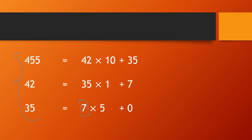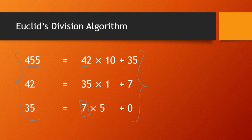So if we skip the long division method and use only Euclid's Division Lemma, we can find HCF of two numbers. First step, second step, third step — and HCF is 7. This procedure of finding HCF of 455 and 42 is defined as Euclid's Division Algorithm.